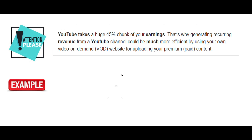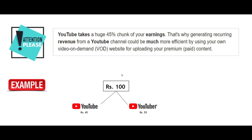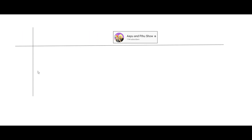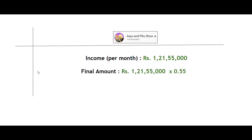For example, if you got 100 rupees from YouTube ads, YouTube takes 45 rupees from that and gives you 55 rupees. So we have to multiply the actual amount by 0.55 in order to get the final amount after YouTube's share. As shown, they are getting 1 crore 21,55,000 rupees per month from YouTube before YouTube's cut. So the final amount will be equal to 66,85,250 rupees.